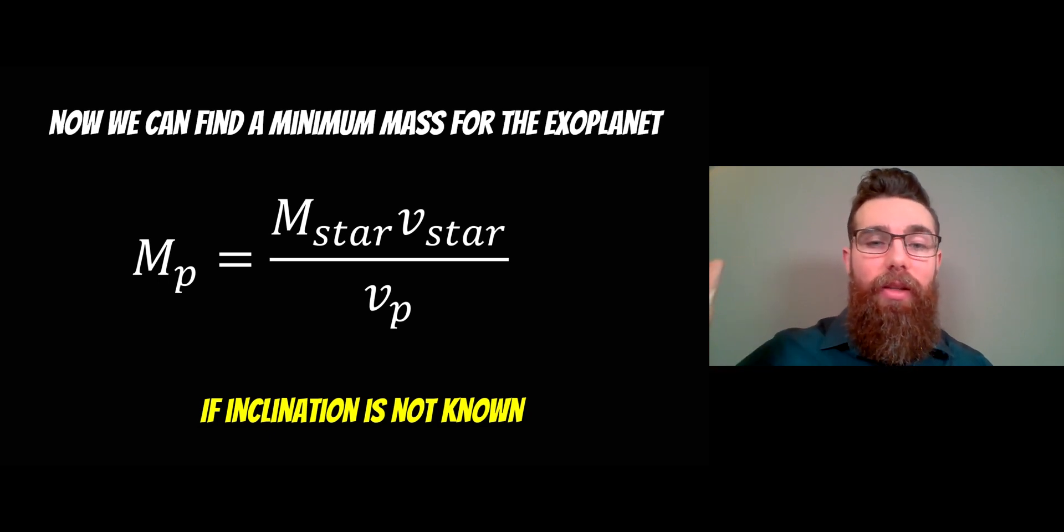But if it's inclined, then actually some of it won't be towards us. We can't measure that component. So normally when we use the radial velocity method and we don't know the inclination, it's going to give us a minimum mass. So that's what we can actually work out in this particular method.